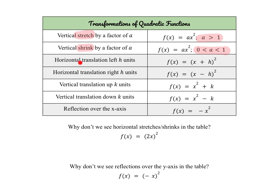We also have horizontal translations — left h units. Remember, if we add h, it actually shifts to the left, and if we subtract h, it shifts to the right. Note that those values are specifically grouped with x — they are part of what's being squared, so that's how we know it's a horizontal translation. For vertical translations, we're adding or subtracting k after the x squared. So if we add k, it shifts up k, and if we subtract k, it shifts down.